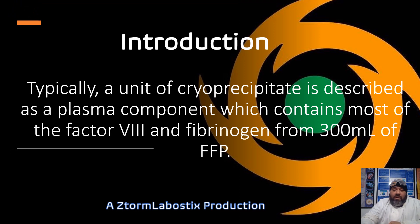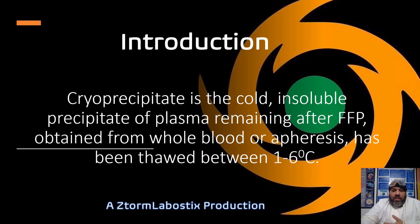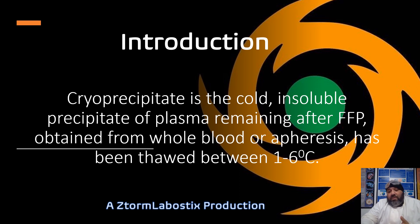Typically, a unit of cryoprecipitate is described as a plasma component which contains most of factor VIII and fibrinogen from 300 mL of fresh frozen plasma. Cryoprecipitate is known in transfusion practices as the cold insoluble precipitate of plasma remaining after fresh frozen plasma has been obtained from whole blood or apheresis and has been thawed out between 1 to 6 degrees.